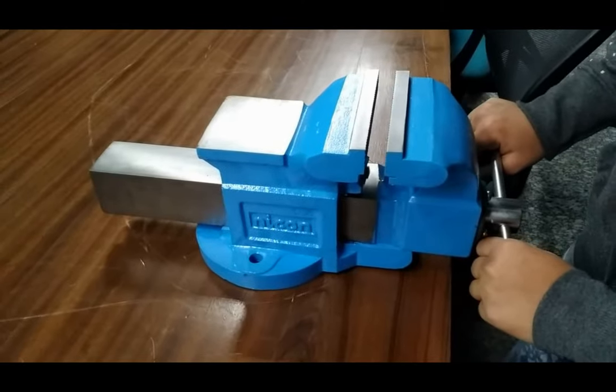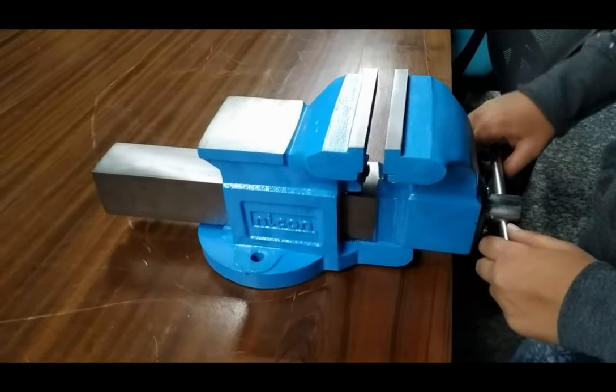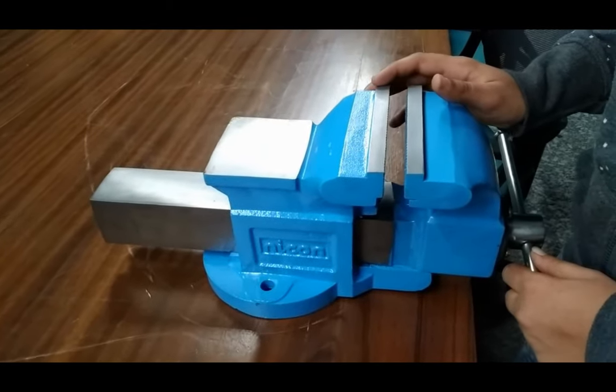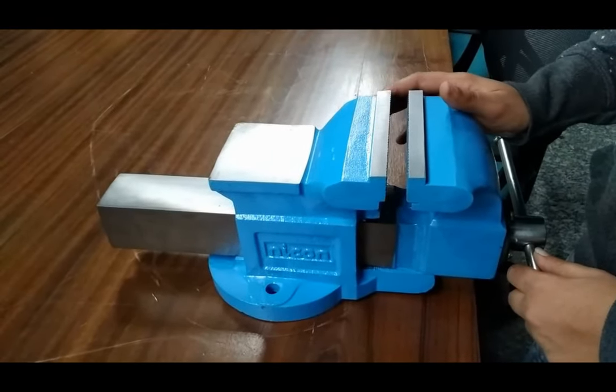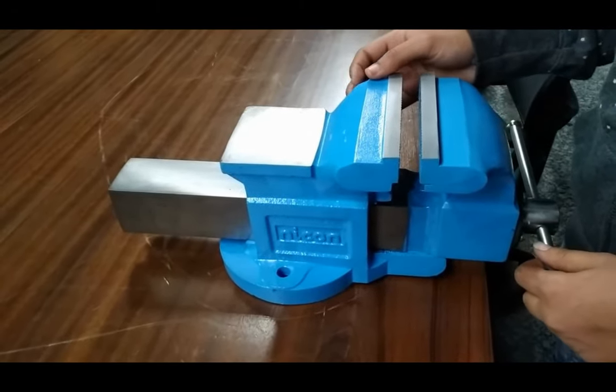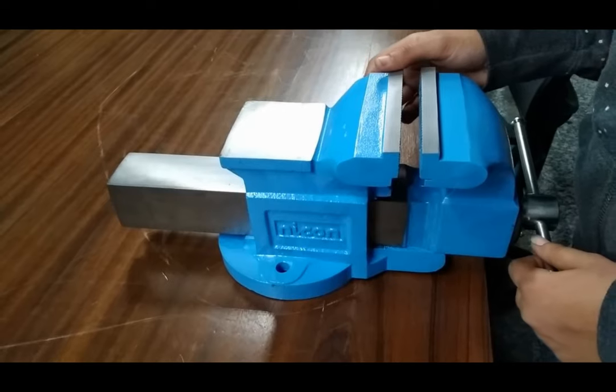It is a heavy duty benchwise with jaws. Highly accurate steel underneath the mild surface. Hardened jaws. Additional forged pipe jaws. Jaw width is 120 mm. It is of forged steel.